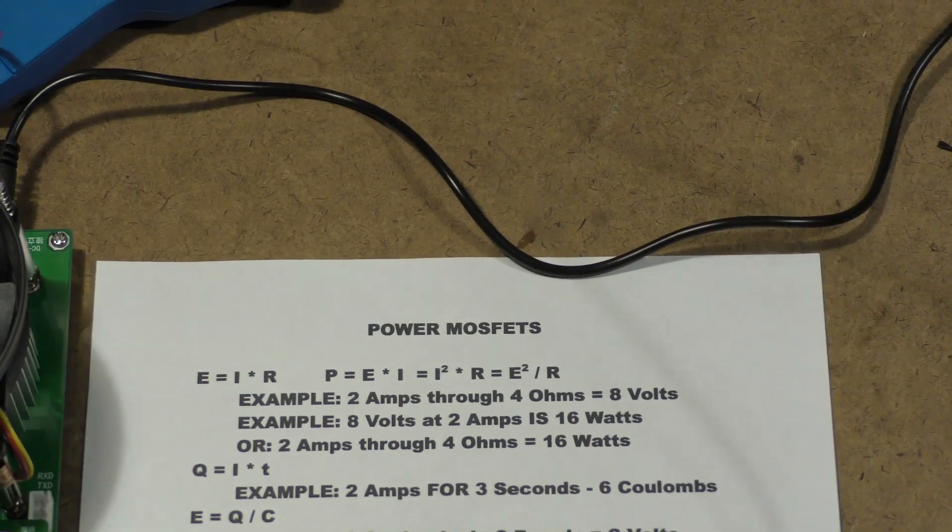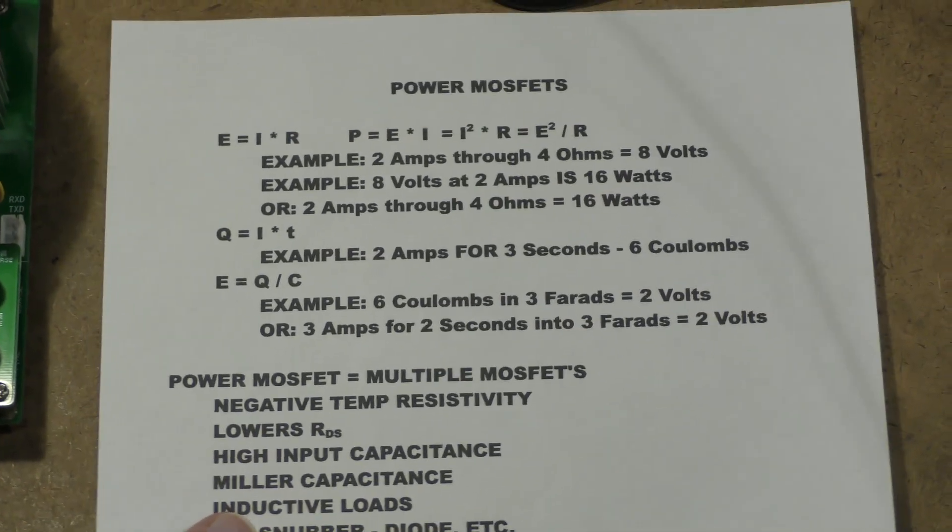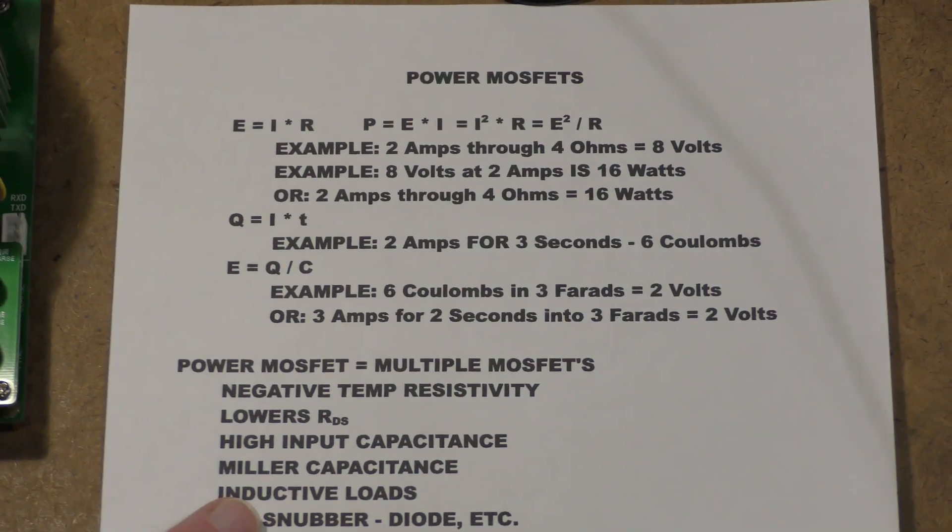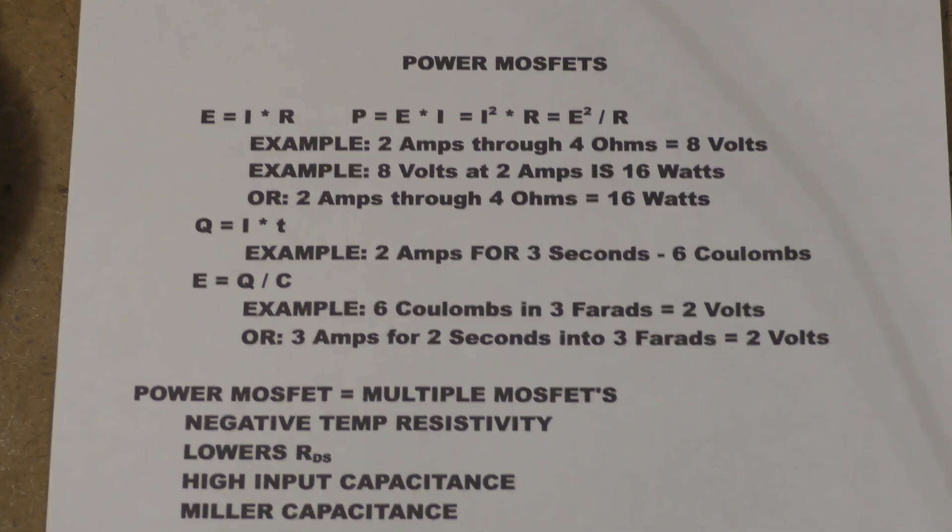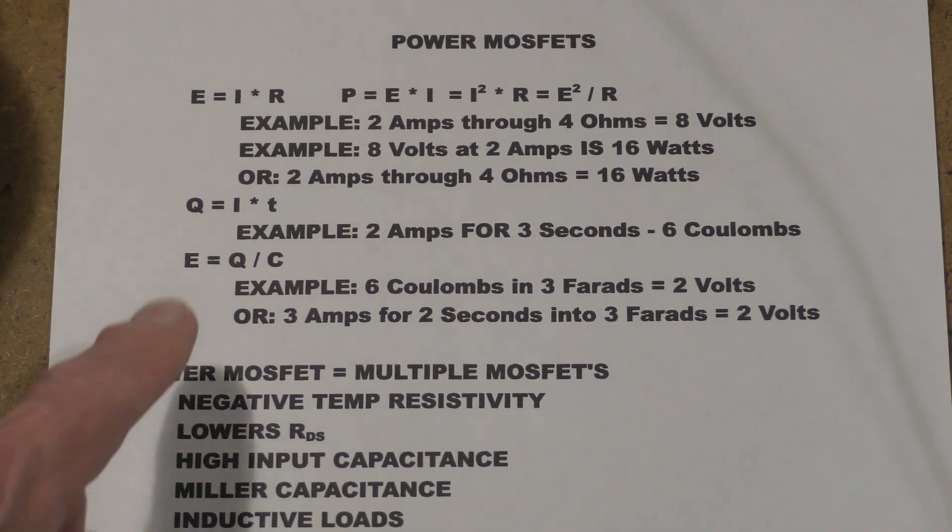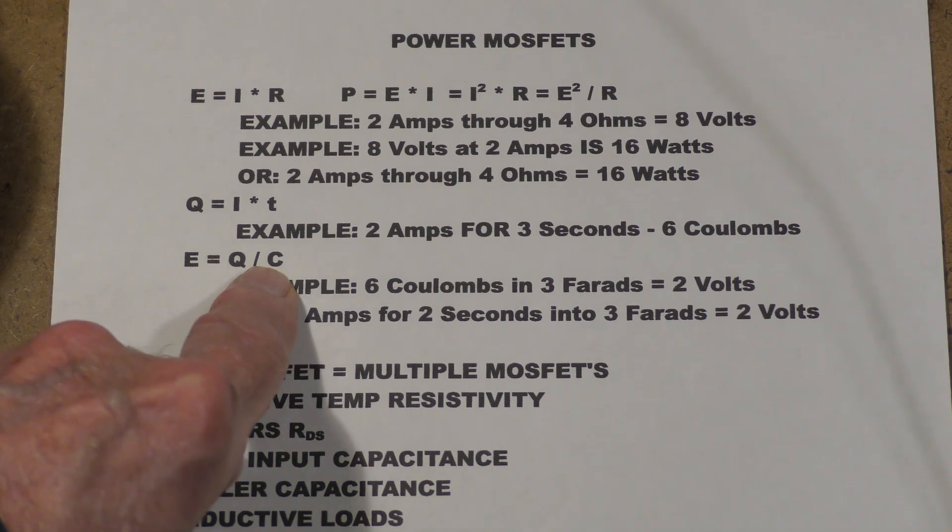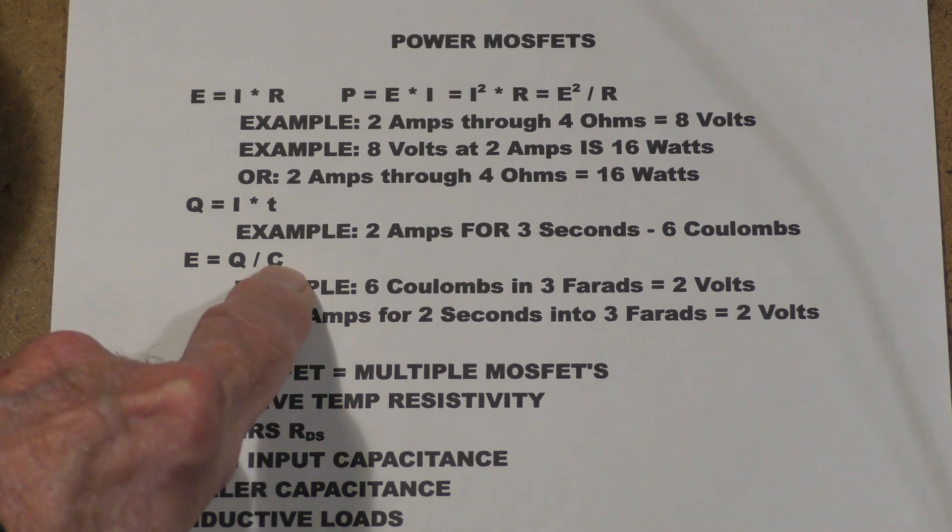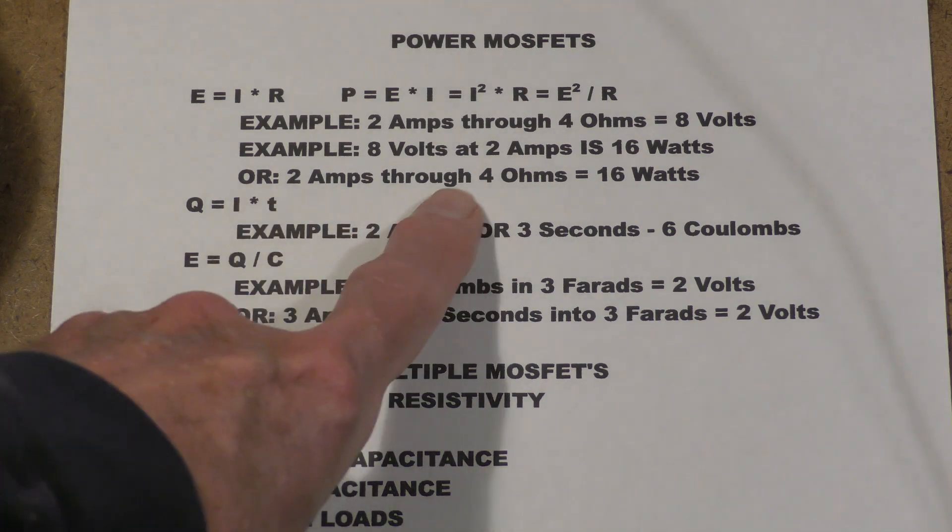Because earlier in my video on power MOSFETs, I incorrectly wrote this formula for the voltage on a capacitor as Q times C. It should be Q divided by C, and a viewer pointed that out and the viewer was correct.